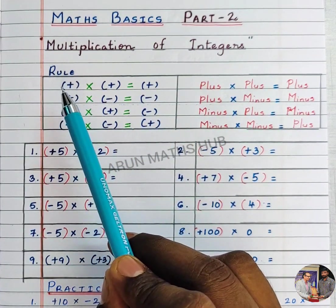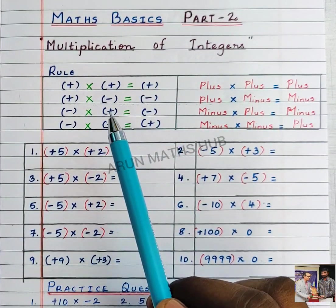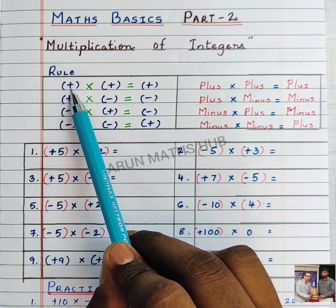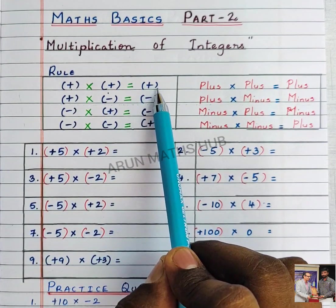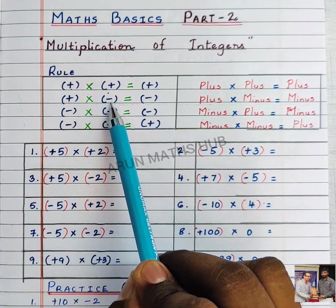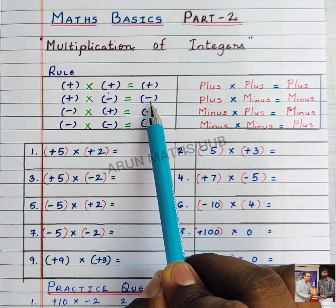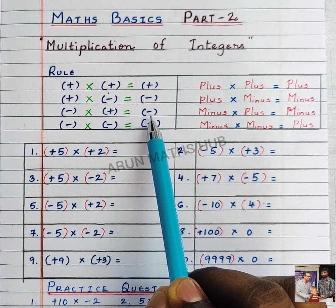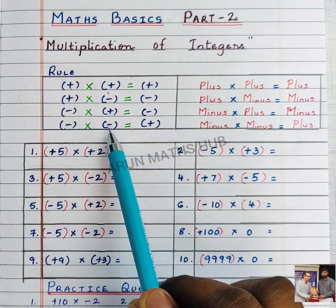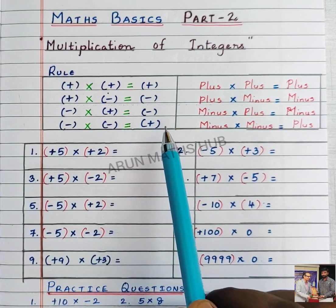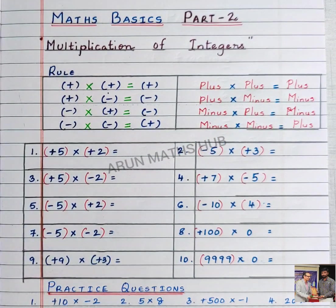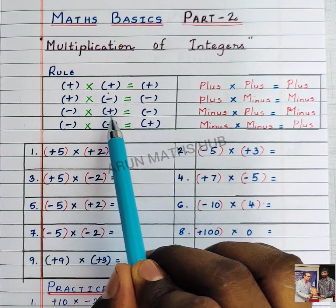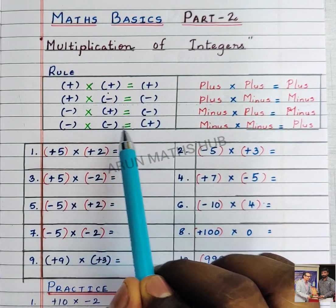The basic rules you should understand before multiplication of integers are: if you multiply 2 positive integers, you get a positive integer. If you multiply a positive integer with a negative integer, you get a negative integer. If you multiply a negative integer with a positive integer, you get a negative integer. If you multiply 2 negative integers, you get a positive integer. That is: plus into plus equals plus, plus into minus equals minus, minus into plus is minus, minus into minus is plus.